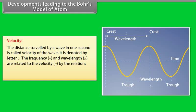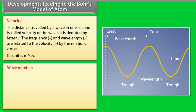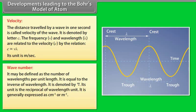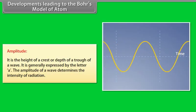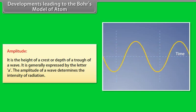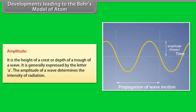Velocity (c) is the distance traveled by a wave per second; frequency and wavelength are related by c = ν × λ. Wave number (ν̄) is the number of wavelengths per unit length, equal to 1/λ, expressed as 1/cm or 1/m. Amplitude (A) is the height of a crest or depth of a trough of a wave; the amplitude of a wave determines the intensity of radiation.